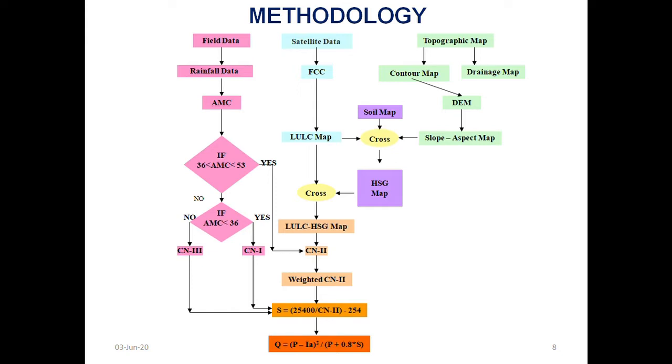Here you can see if AMC is less than 36 or AMC is less than 53, then we can have an antecedent moisture condition at curve number two, and if AMC less than 36, if no, we will go for curve number three, and if yes, if it goes through curve number one. Finally, we will have a curve number two value by delineation of land use land cover and hydrological soil group map.